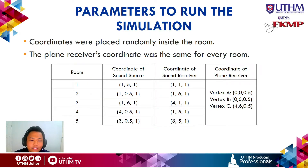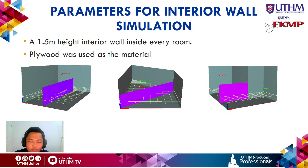Next are the coordinates for the sound source, sound receiver, and plane receiver. The sound source and sound receiver were placed randomly inside each room with different coordinates. For the plane receivers, the coordinates are the same for every room. For the interior wall simulation, a 1.5-meter-height interior wall was built inside every room, and the material classification used was plywood.